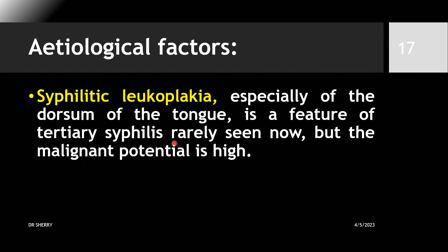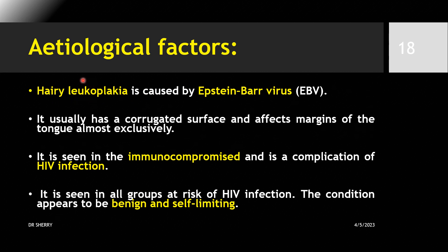As mentioned in the etiology lecture, syphilitic leukoplakia — specifically tertiary syphilis — has a high malignant potential, more so than other types. Another etiological factor involves EBV, which typically causes a corrugated surface affecting the margins of the tongue, almost exclusively seen in HIV-positive and immunocompromised patients.